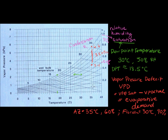Now let's talk about Florida. Florida is at 30 degrees, so the saturation curve at 30 degrees is about 4.25 kilopascals. And they are at 90% relative humidity, so wherever it hits 30 degrees that is about 3.75. So the vapor pressure deficit in Florida is much less - that's about 0.5 kilopascals - much less than the 3.2 kilopascals in Arizona.